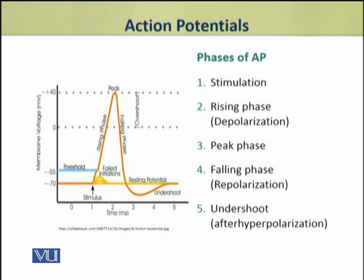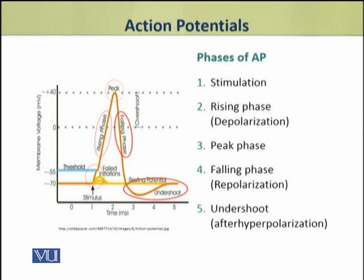The first step is the stimulation. The second step is the rising phase, in which depolarization occurs. The third phase is the peak phase. The fourth is the falling phase, in which repolarization occurs. The last phase of action potential is the undershoot, also known as after-hyperpolarization.